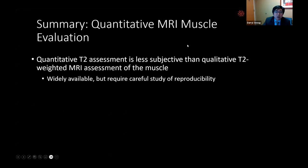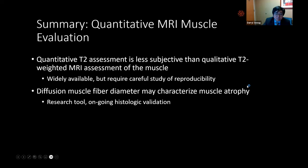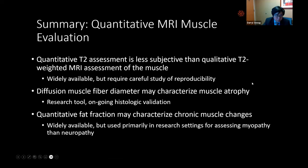In summary for muscle evaluation: quantitative T2 assessment is less subjective than qualitative T2-weighted MRI and is widely available but requires careful reproducibility study. The diffusion muscle fiber diameter tool may characterize muscle atrophy and is currently a research tool under development and validation. Quantitative fat fraction may also characterize chronic muscle changes and is widely available, primarily used in research for assessing myopathy and neuropathy.